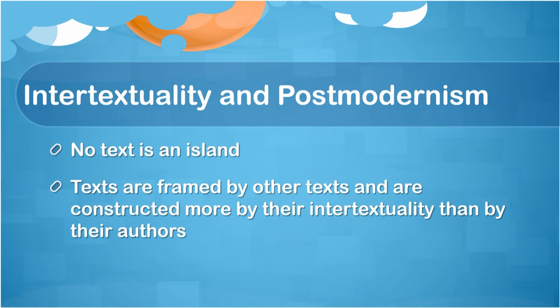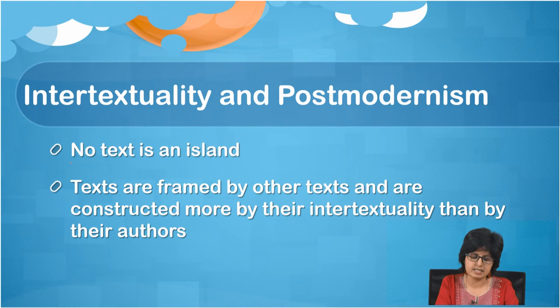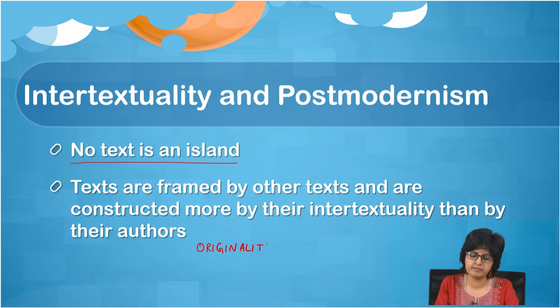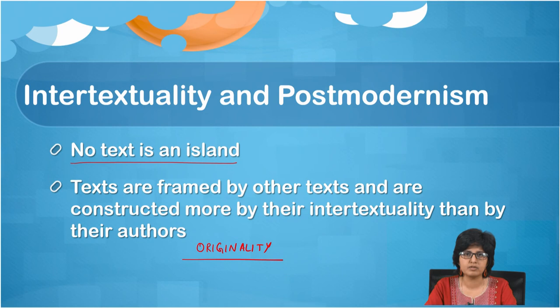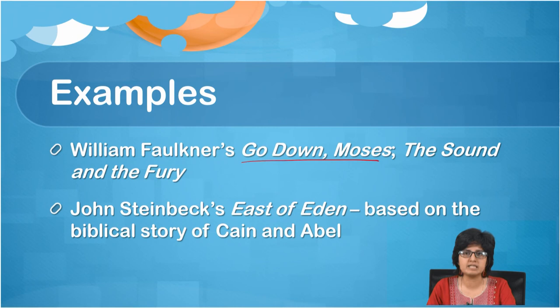So how do we begin to see the connections between intertextuality and postmodernism? In a very typical way, the play of intertextuality in the postmodern age foregrounds that no text is an island, because every text is framed by other texts and constructed more by their intertextuality than by their authors. Here we are also reminded of the absence of originality and the false claims to originality that Barthes and Foucault spoke about when deconstructing the idea of the text and the author.